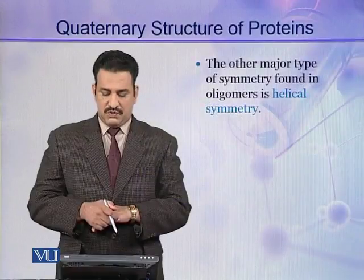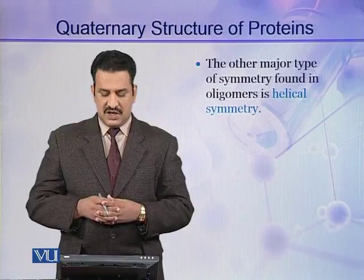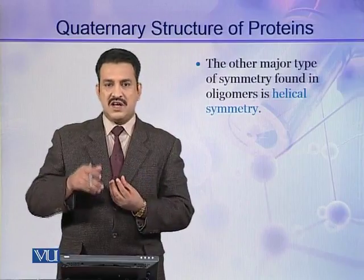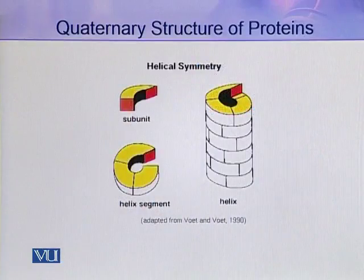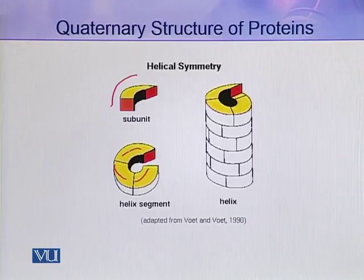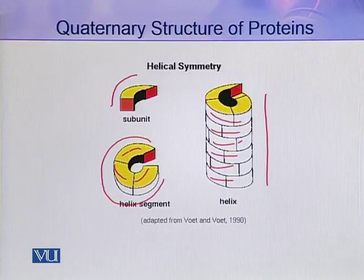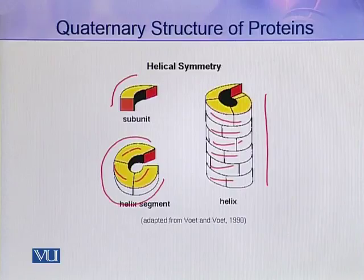The other major type of symmetry besides rotational symmetry is helical symmetry. In helical symmetry, protein subunits or protomers are helically arranged. For example, in this figure you can see a single protomer, and these protomers are attached together to form a single helix segment. Many such helix segments are arranged together. This helix exhibits helical symmetry, and this protein is at its quaternary level of organization. An example of such symmetry is present in the capsids of different viruses, like tobacco mosaic virus.